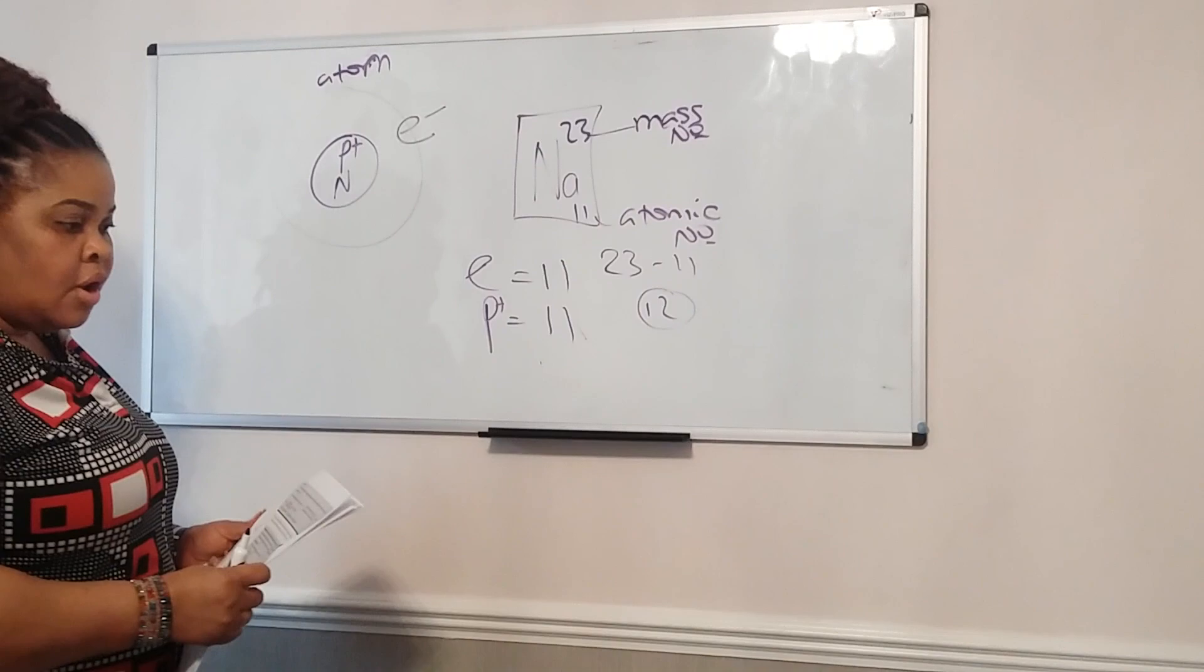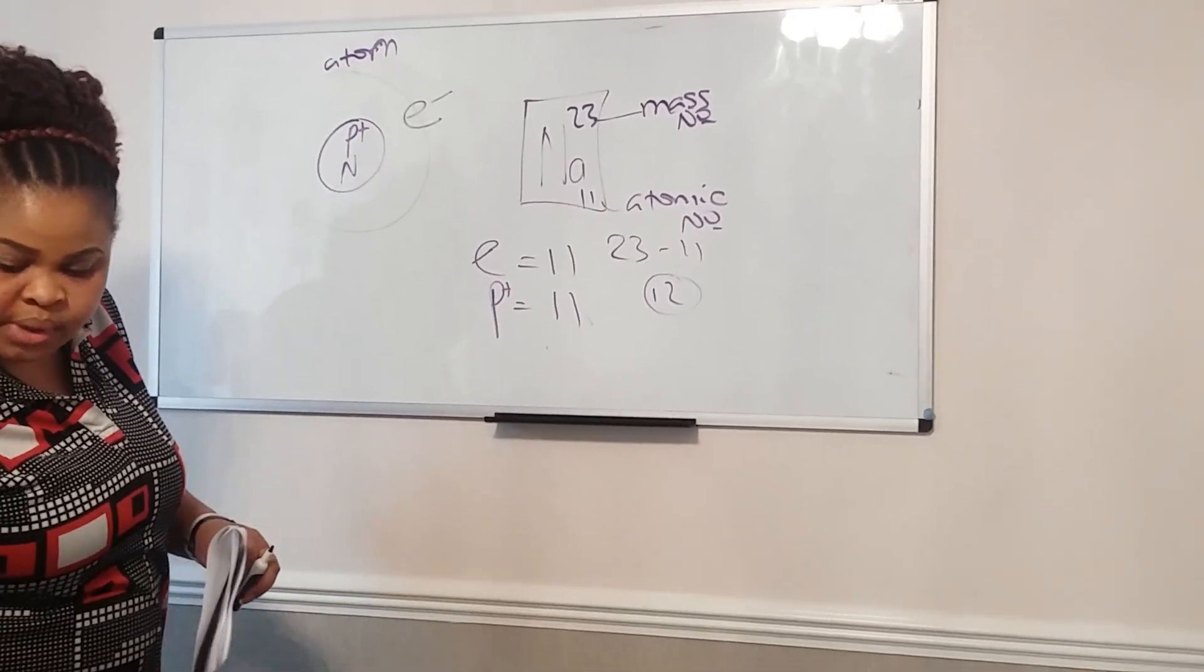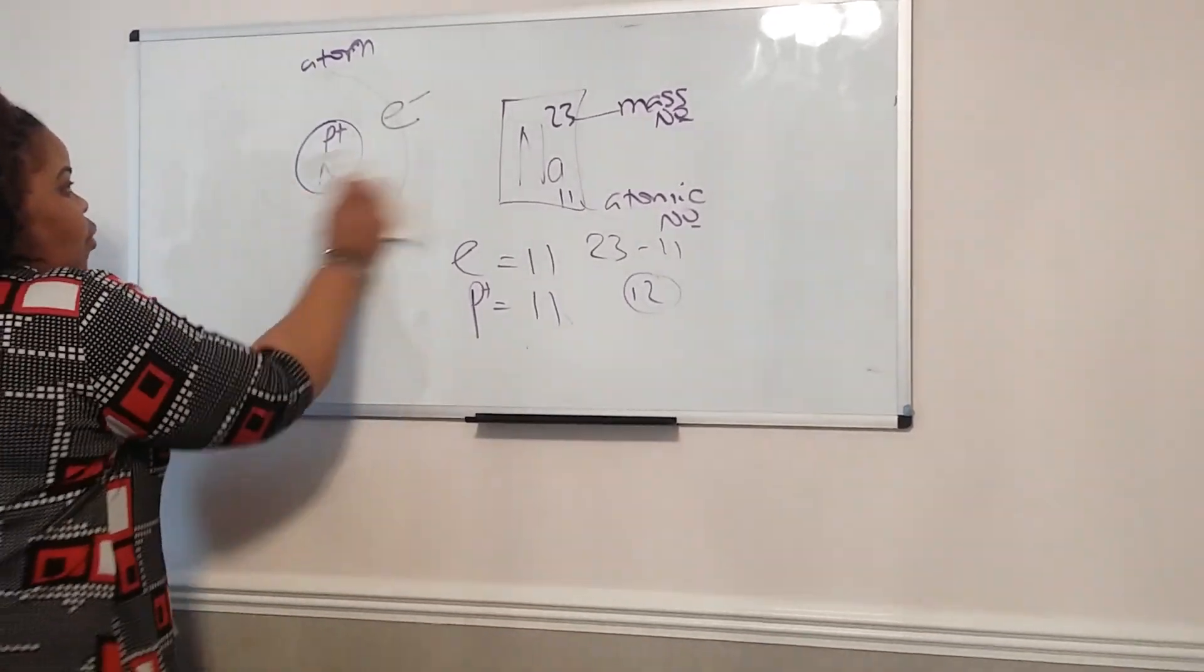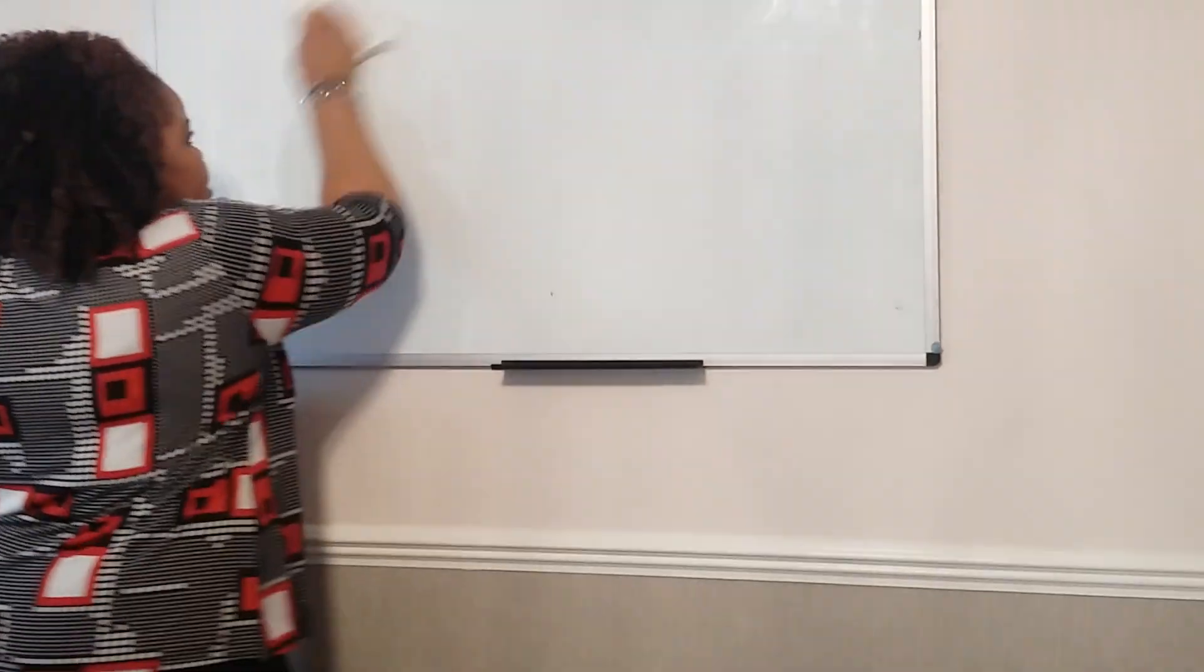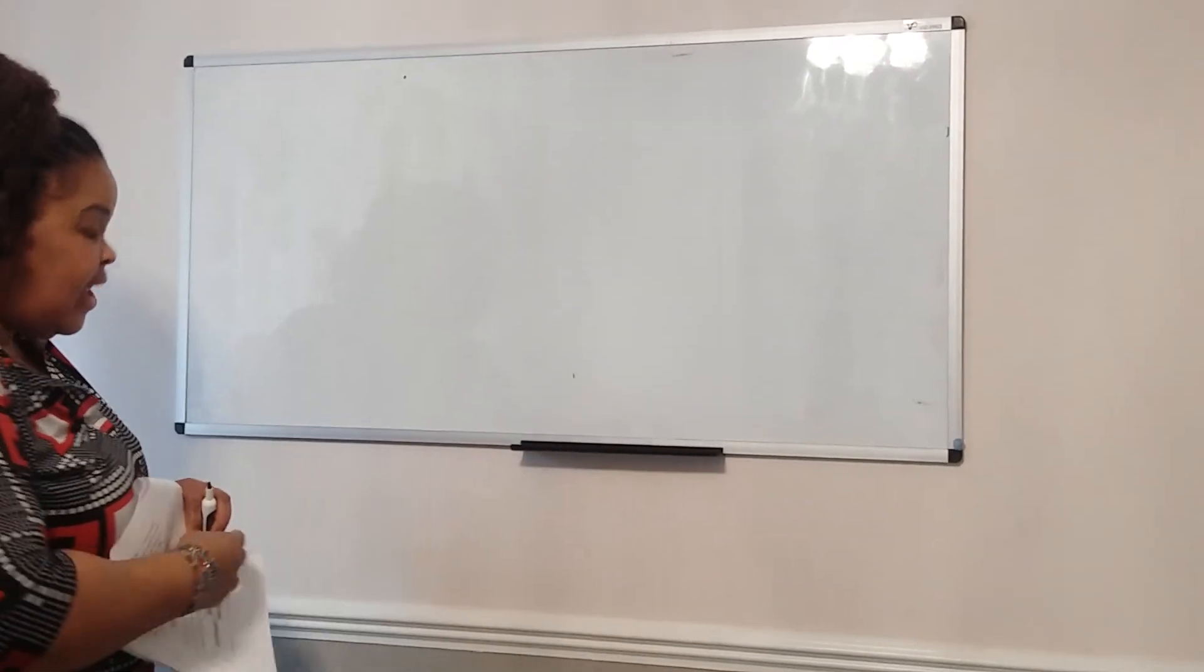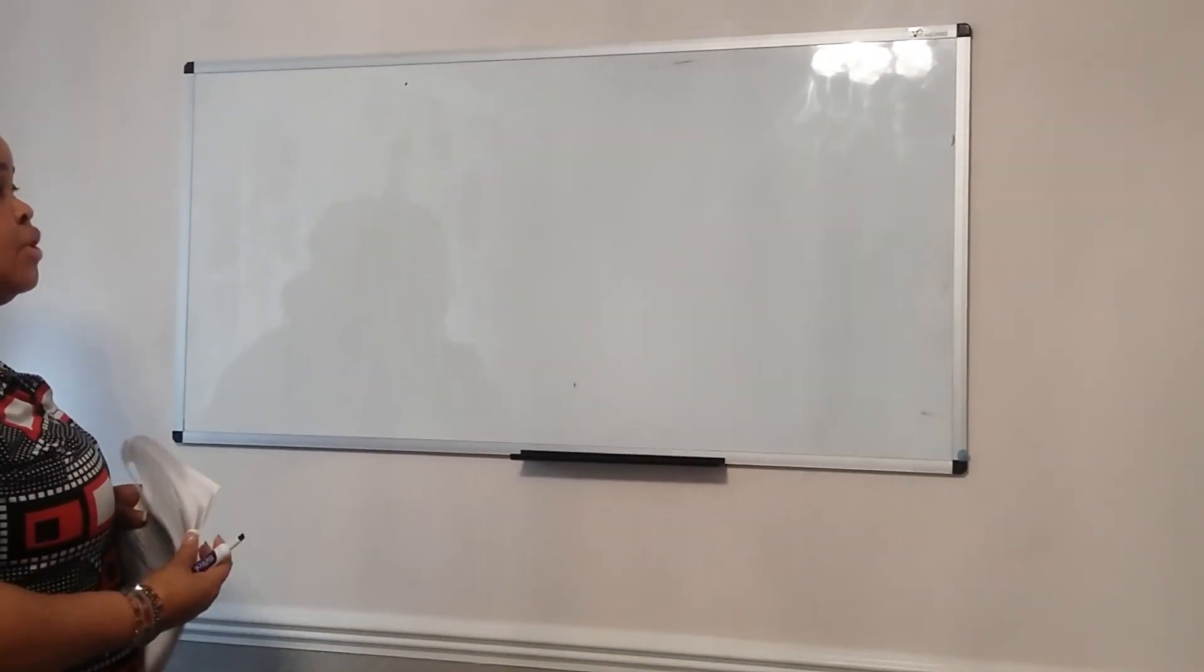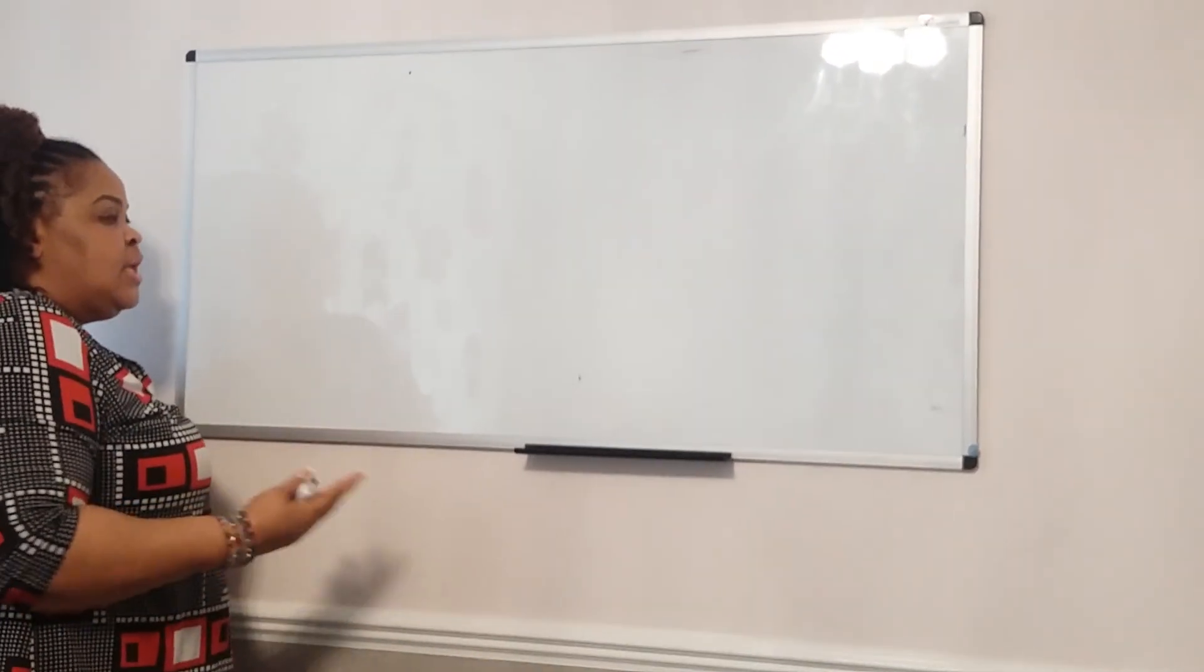I'm going to just quickly run over where they live or how elements are arranged on the periodic table. Now, on the periodic table, which was given to us by Dimitri Mendeleev, the one we use today was initially given to us by Dimitri, and he actually left some gaps. Eventually, we have over 118 elements that have been discovered today, and they are arranged in a very specific order.